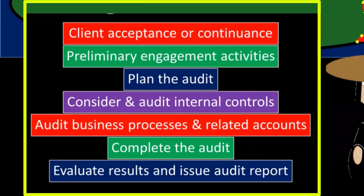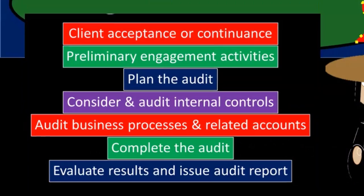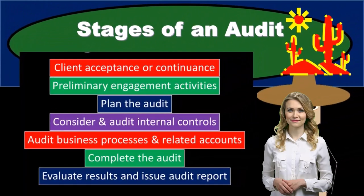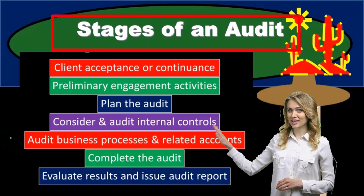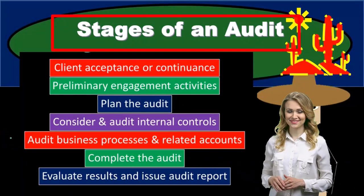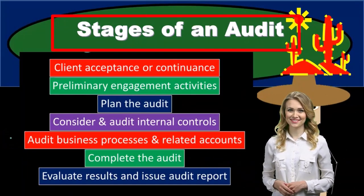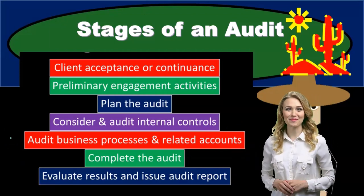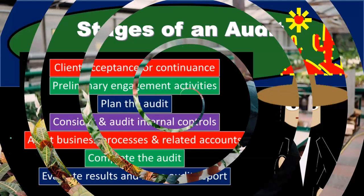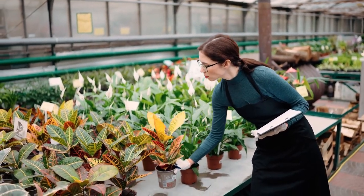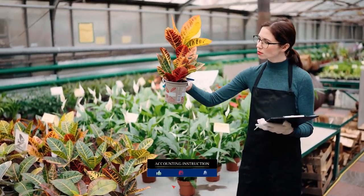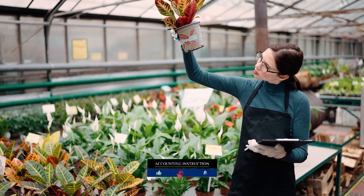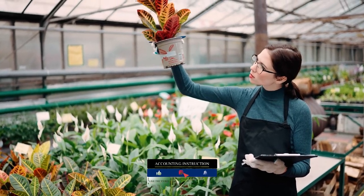We're going to list out those stages at this point, and then as we move forward, we'll be concentrating on specific stages. Now, when we consider the audit, we're often thinking about the completed financial statements and trying to think about whether they have been completed in accordance with a set of rules. In essence, we're thinking about the end product and drilling down on it to see if it's structurally sound or put together in accordance with some type of rules.